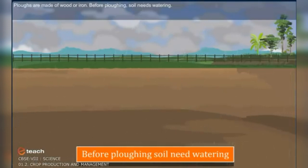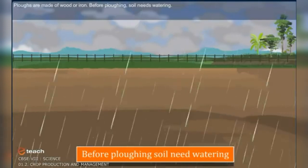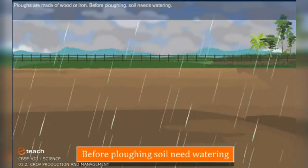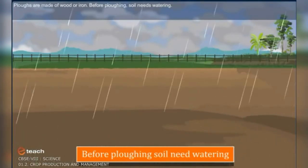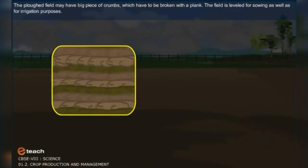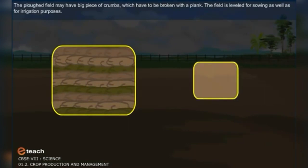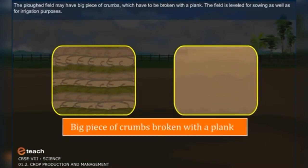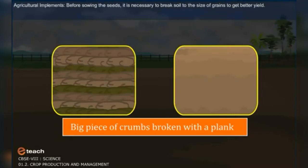Ploughs are made of wood or iron. Before ploughing, the soil needs watering. The ploughed field may have big pieces of crumbs which have to be broken with a plank. The field is leveled for sowing as well as for irrigation purposes.